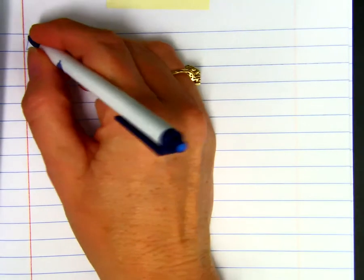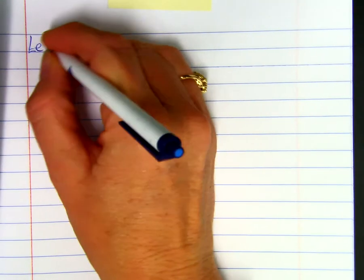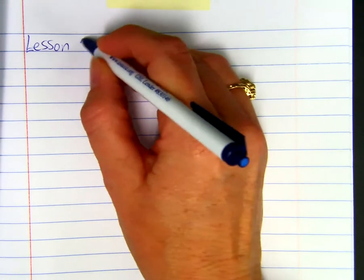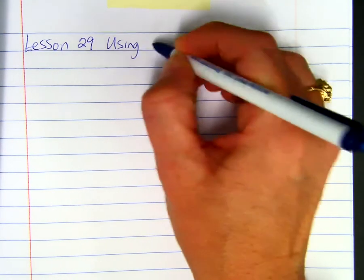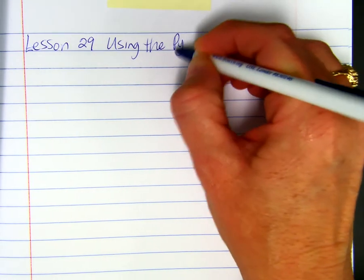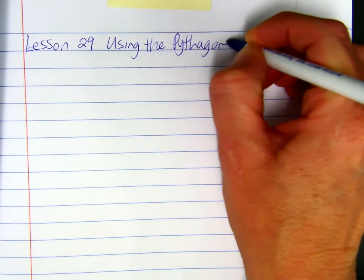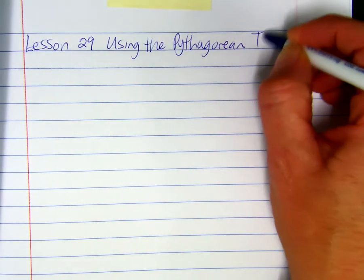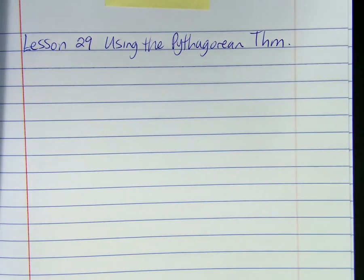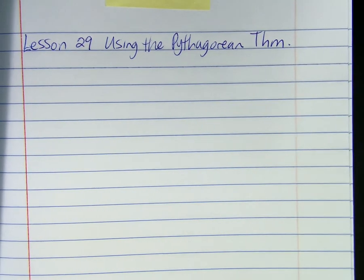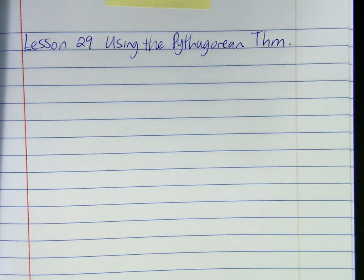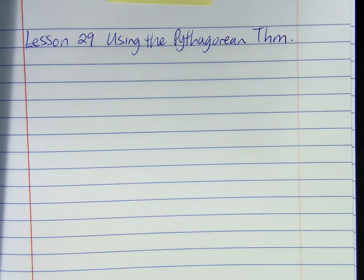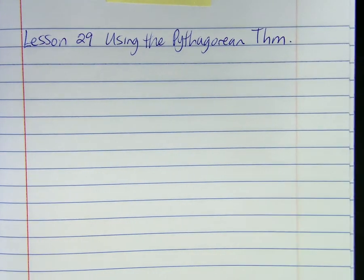Lesson 29, using the Pythagorean Theorem. The Pythagorean Theorem is A squared plus B squared equals C squared, where A and B are the legs of a right triangle, and C is the hypotenuse.